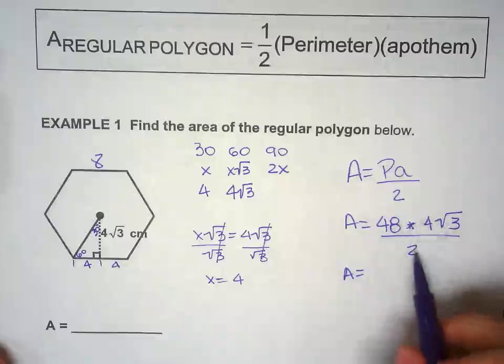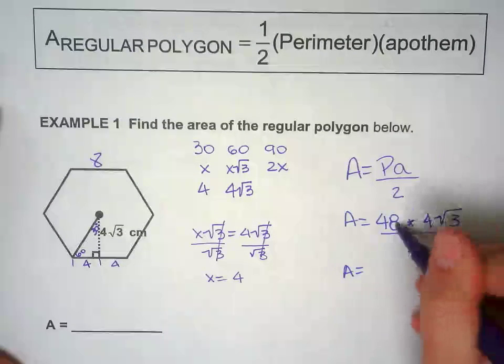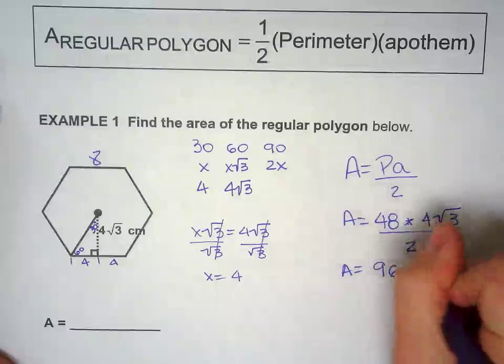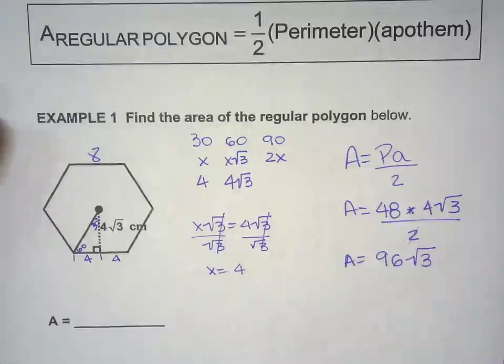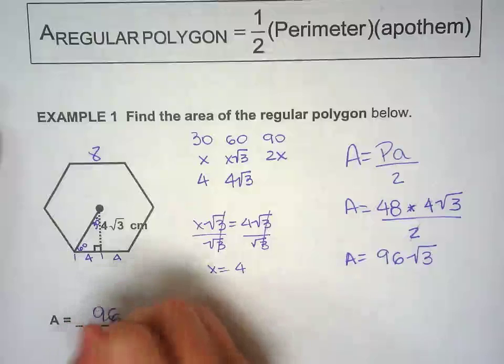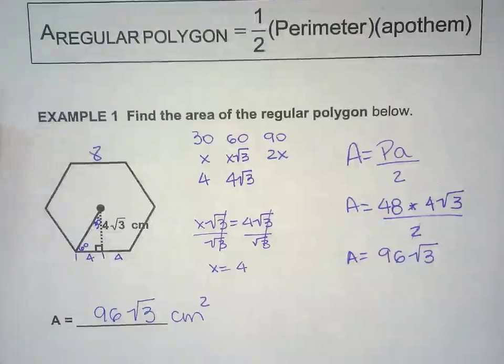You can put 48 times 4 divided by 2 in the calculator, or you can simplify that and get 48 times 2, which is 96. You do not put the square root of 3 in the calculator, because I want your answer in terms of square root. So area here, 96 square root of 3 centimeters squared, because it's area.